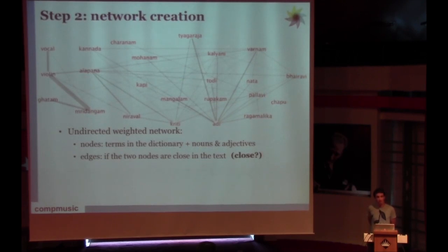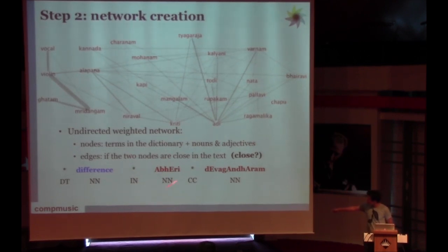The nodes are the terms in the dictionary plus the nouns and adjectives, and then the edges are created between two terms if the two nodes are close in the text. But what does closeness mean here? Closeness means how many words in between we have. For example, Abheri and Devagandhari are two words, it's like one and two, we consider it one plus one. The distance between difference and Devagandhari will be one, two, three, four.